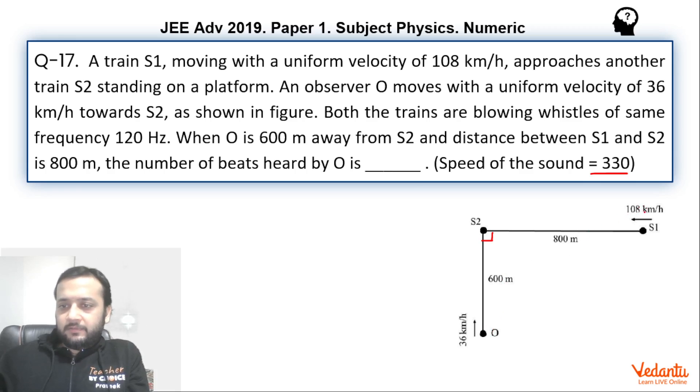So if you convert this speed in kilometers per hour to meters per second, this will be 30 meters per second. Similarly, this will be 10 meters per second.